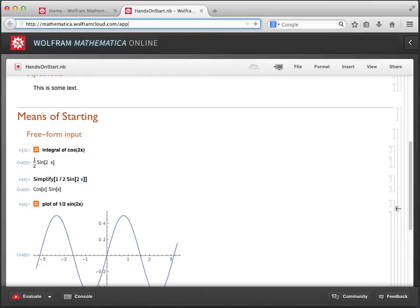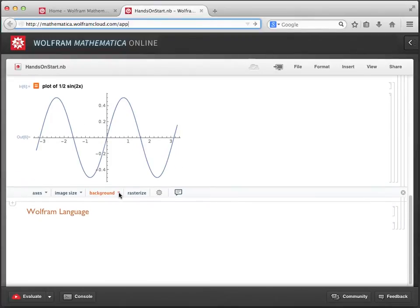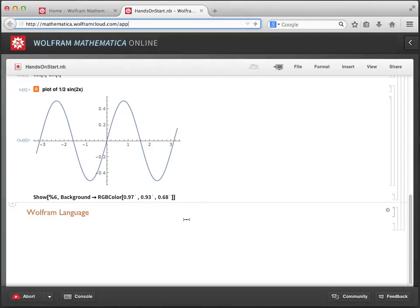As before, Mathematica pings the Wolfram server and then returns the result. You'll see that the Suggestions bar offers commands that are relevant for visualizations. For example, by clicking Background and using the menu that pops up, we can change the color to Goldenrod to apply a different look to our graphic.